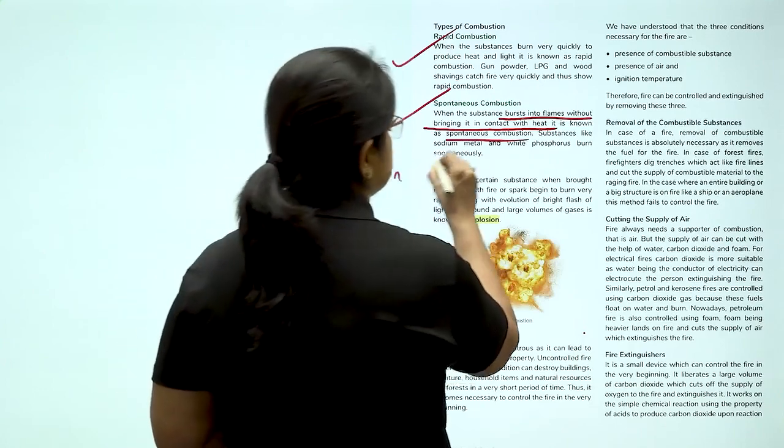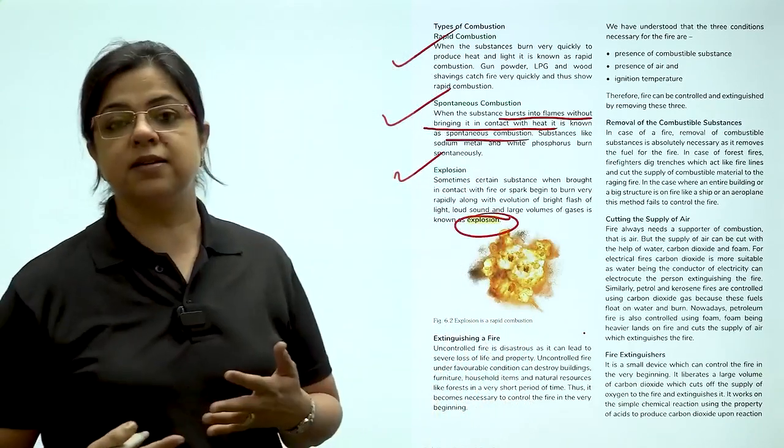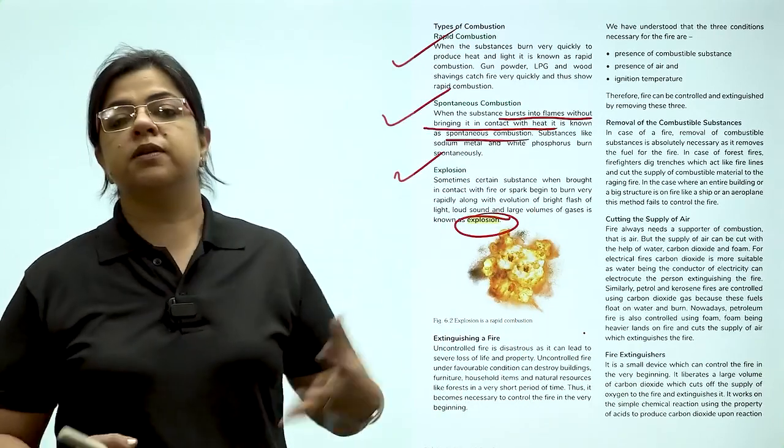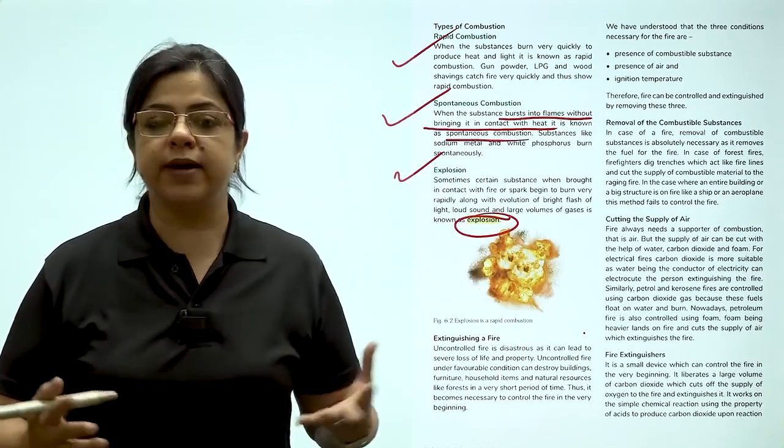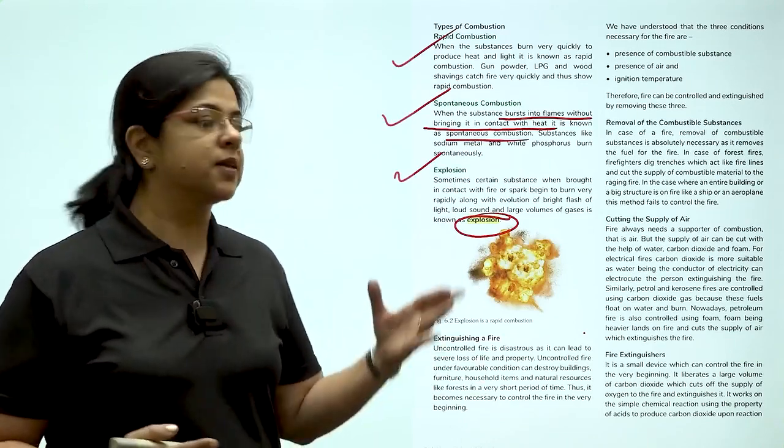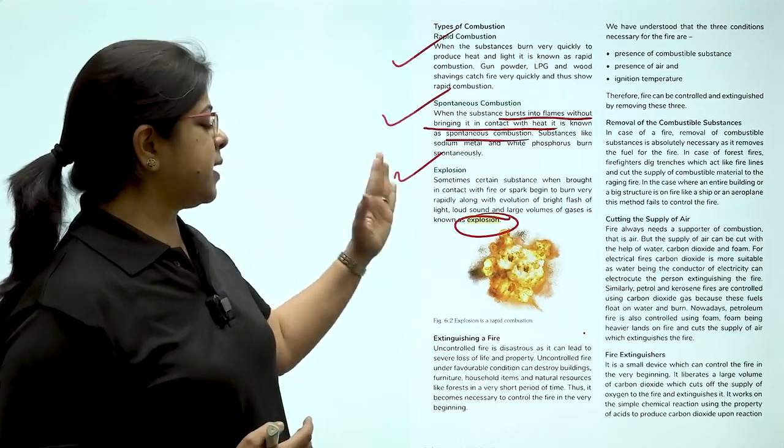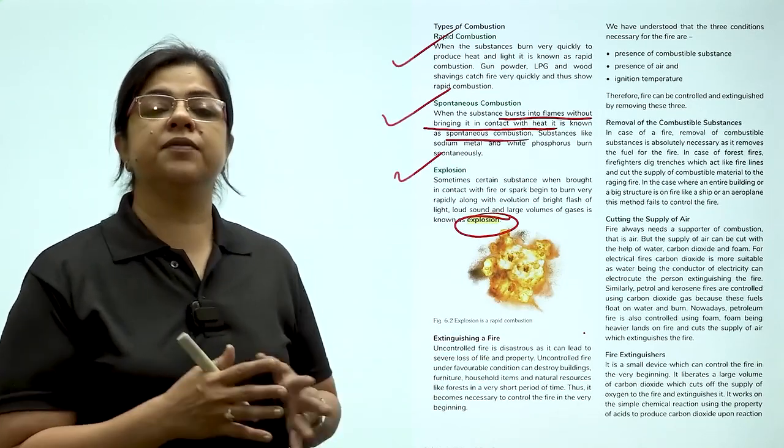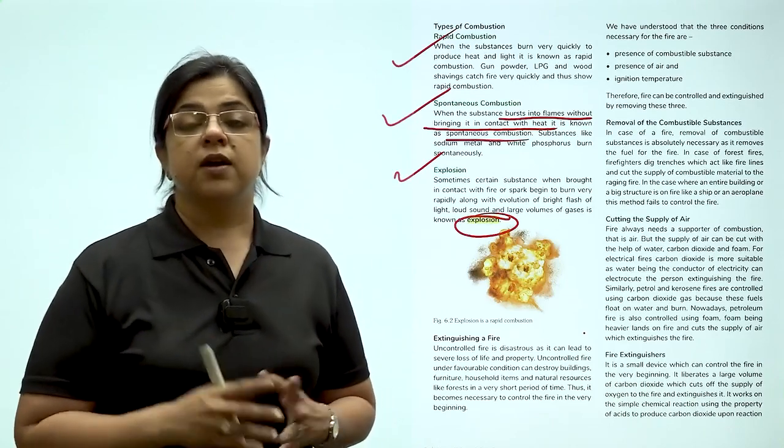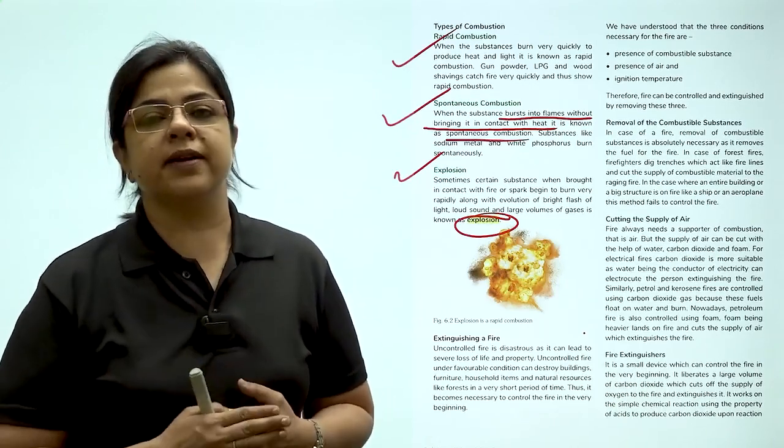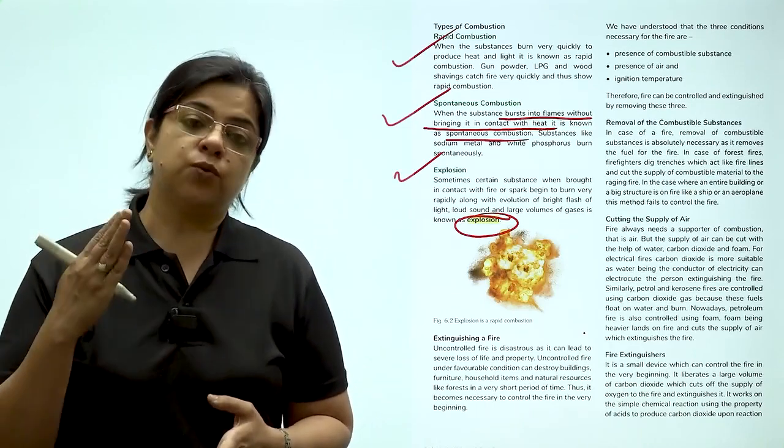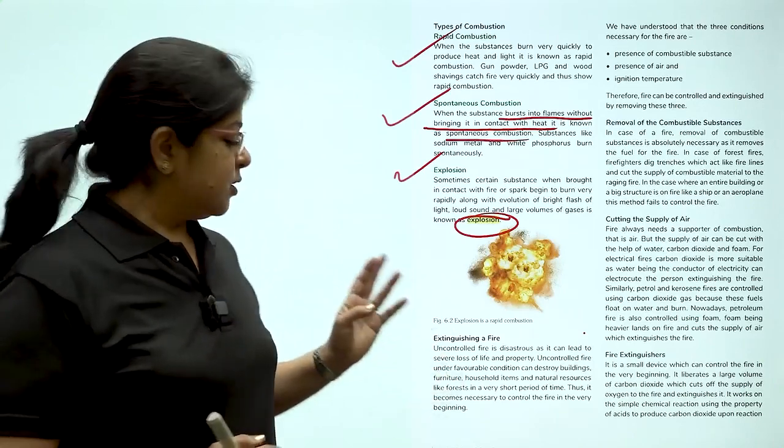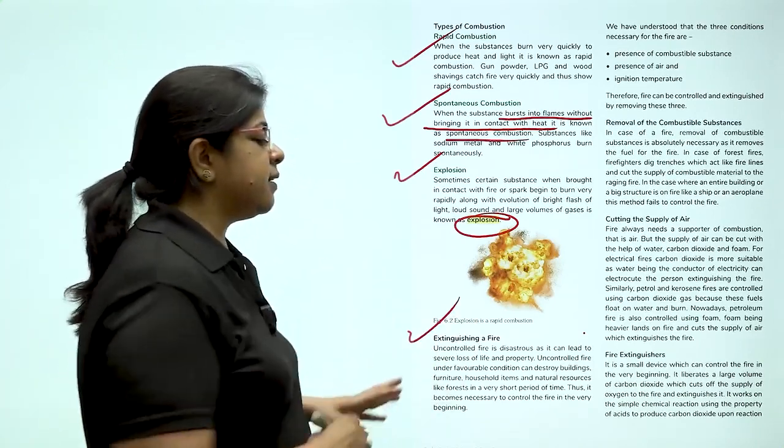Then there is explosion. So we all have heard about crackers. We have seen crackers. We have heard about bombs. These explode with a large amount of noise and release large amount of gases. So this is the third type of combustion. Now during Diwali, we are given a list of instructions to follow. Number one being do not burn crackers. Now if you are a really naughty child and you want to burn crackers, what do you do in case there is a fire?